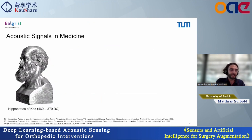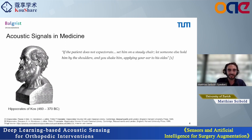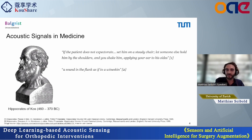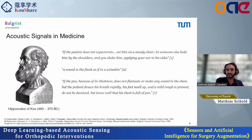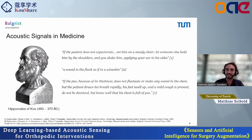In medical applications, these signals were already used in ancient times. Hippocrates described the following in one of his works: 'If the patient does not expect it, seat him on a steady chair, let someone hold him by the shoulders, shake him and apply your ear to his sides, looking for a sound as in a wine skin.' This is a technique to diagnose thoracic empyema, which is a lung disease.